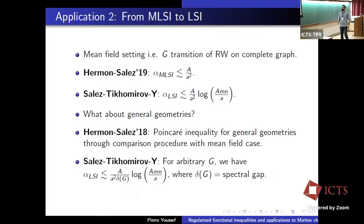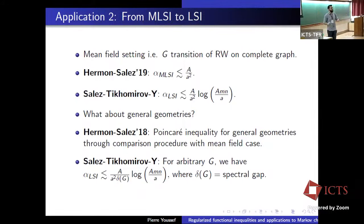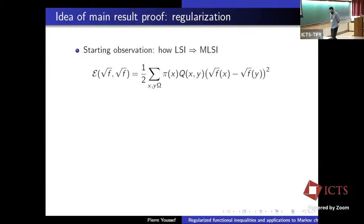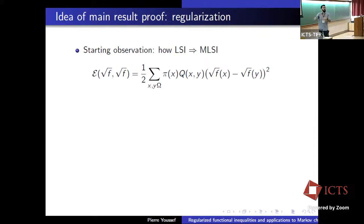So to summarize: we used regularization to obtain LSI from MLSI, giving a complete understanding of the relation between MLSI and LSI. As a consequence, MLSI and LSI are the same for sparse chains. We used this to characterize MLSI for the lamplighter chain, refuting questions of Montenegro-Tetali and Hermoso-Perez. And we went from MLSI to LSI with the advantage that LSI is good for comparisons, implementing such comparison for the zero range process to get bounds for arbitrary geometries. Now let me give a hint of the proof. The starting point is to understand why LSI was even stronger than MLSI — how did we get that the MLSI constant is smaller than the LSI constant over 4?